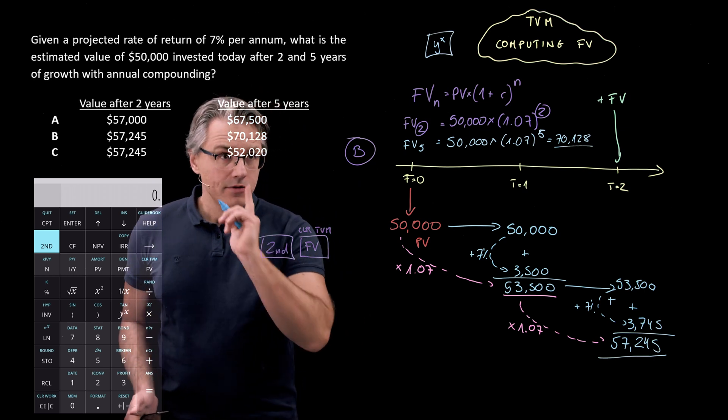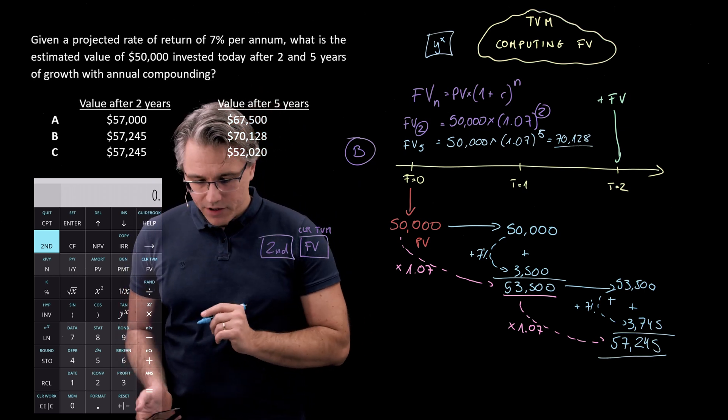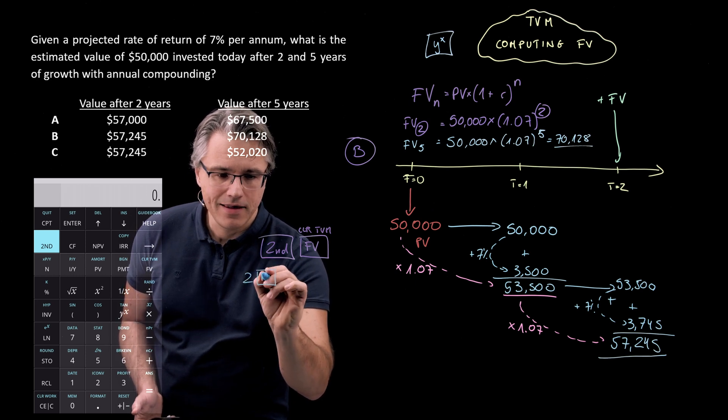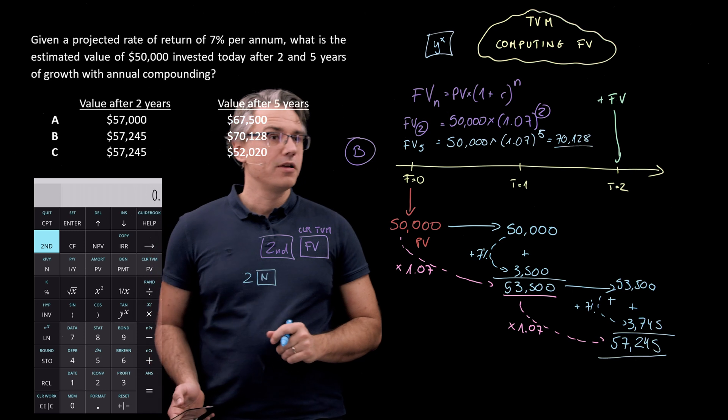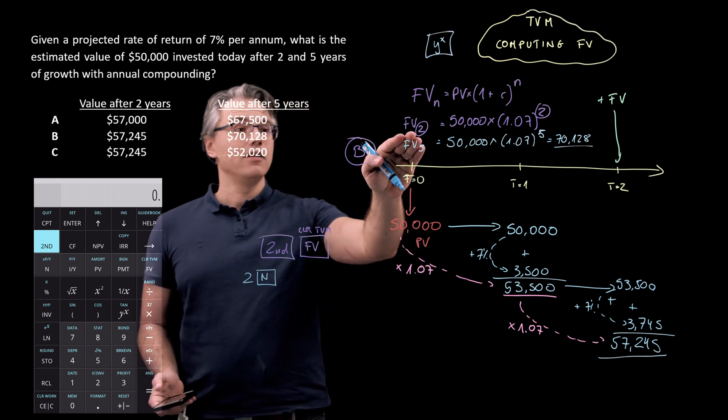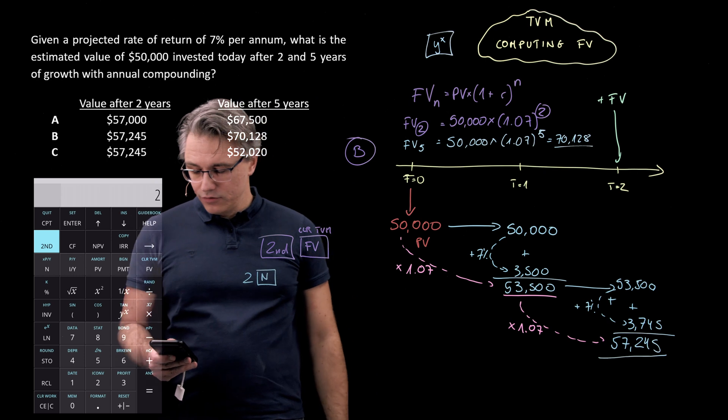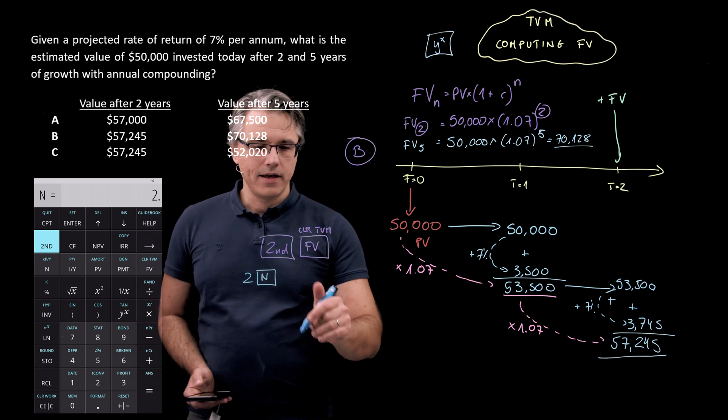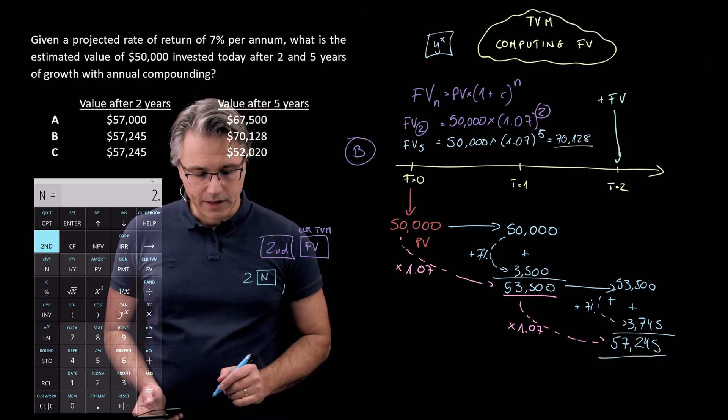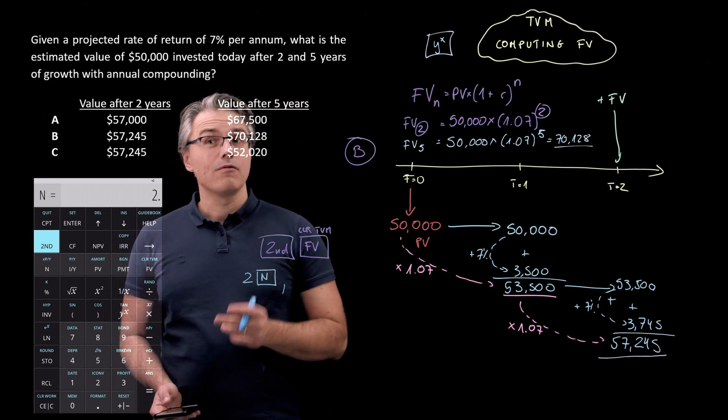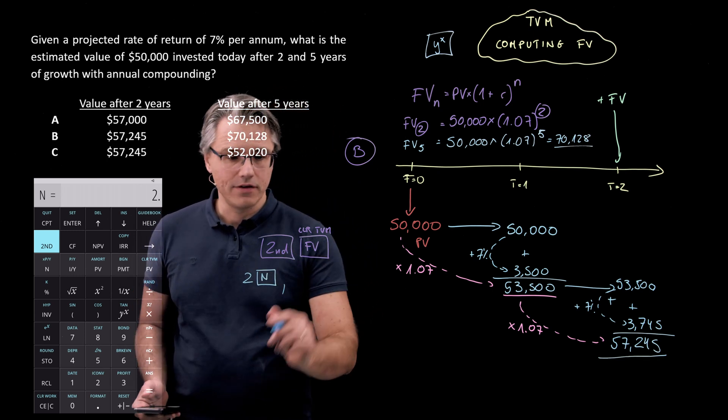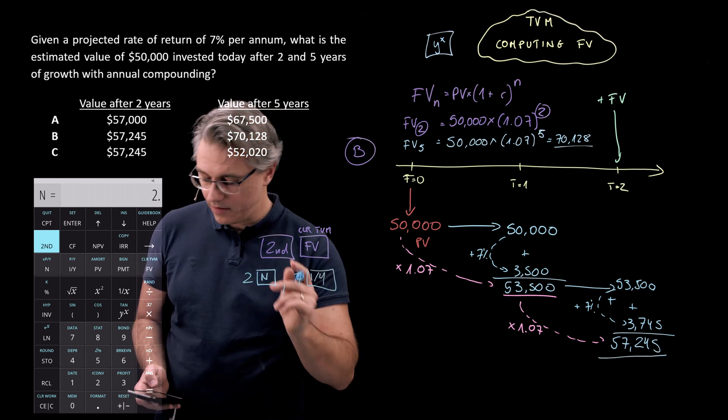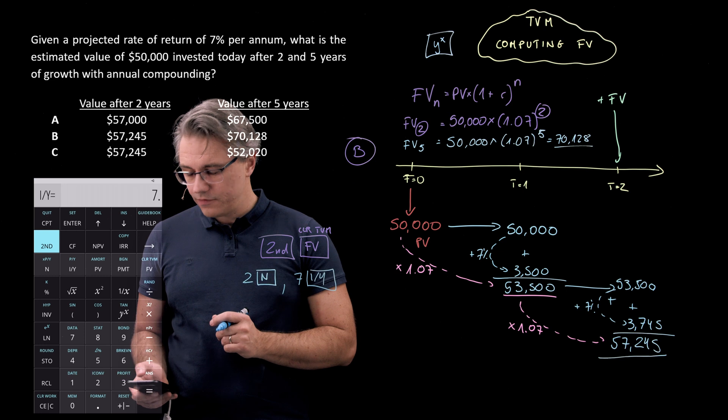And the inputs are going to be as follows. We're going to have the number two, followed by the N button. That's the number of periods, because I'm trying to compute the future value at the end of year two. So two, followed by N. After that, I'm going to have the next input, which is the rate of return required on the investment. That's seven. So seven, followed by I over Y. That's the rate of return, seven I over Y.